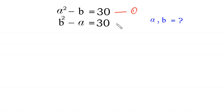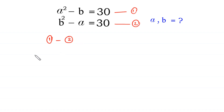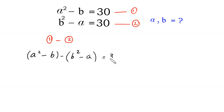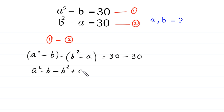We name the first equation 'equation 1' and the second 'equation 2'. Now we subtract equation 2 from equation 1. The left side gives a squared minus b minus (b squared minus a), and the right side gives 30 minus 30 equals 0.